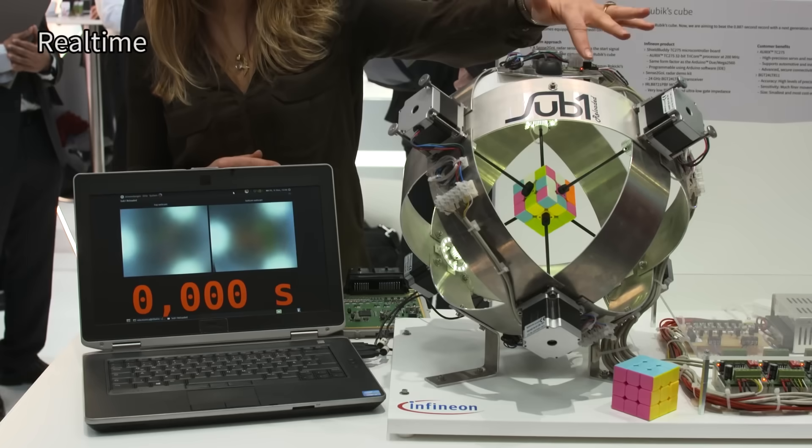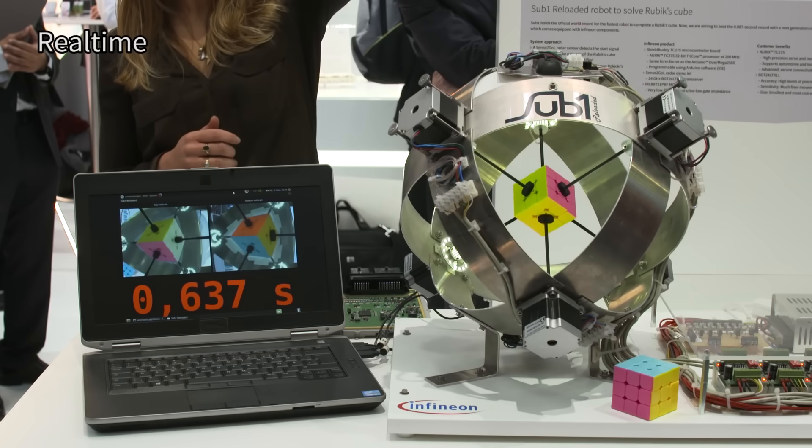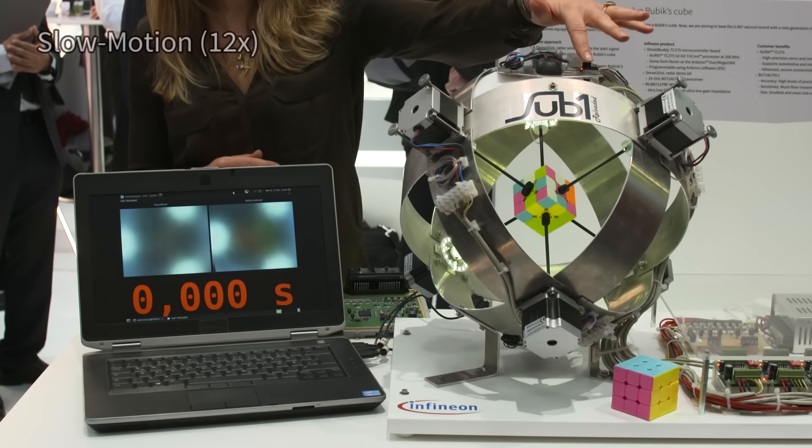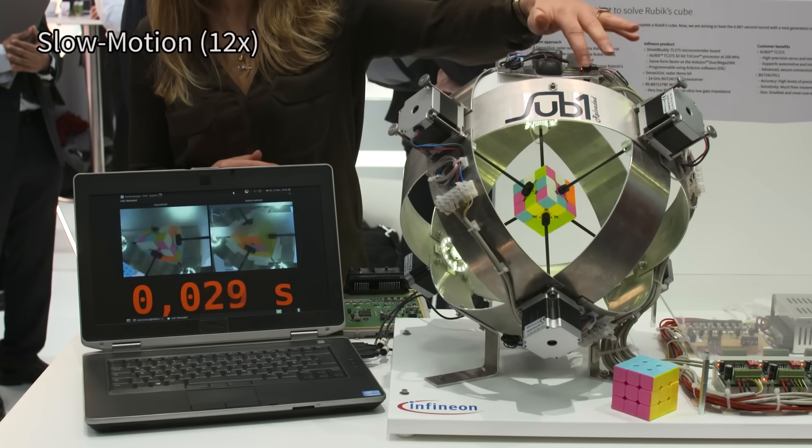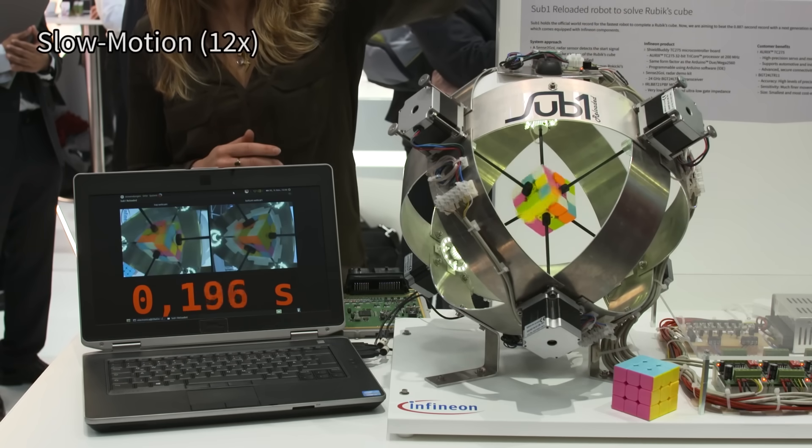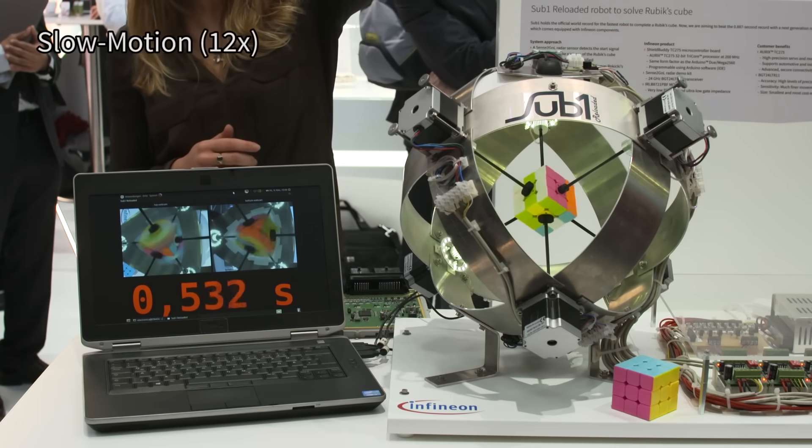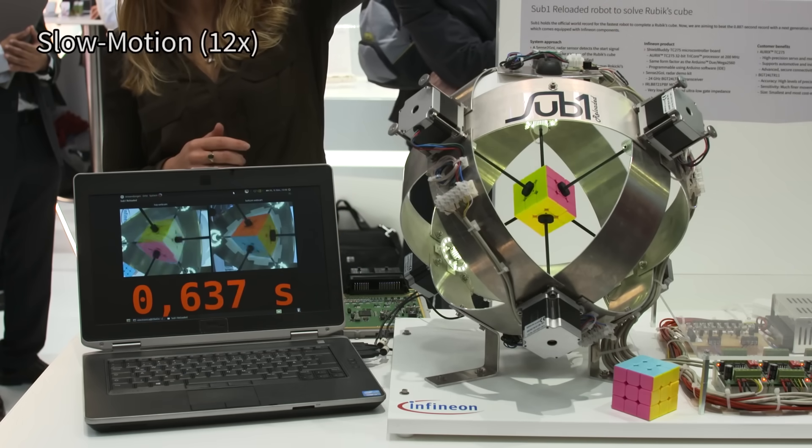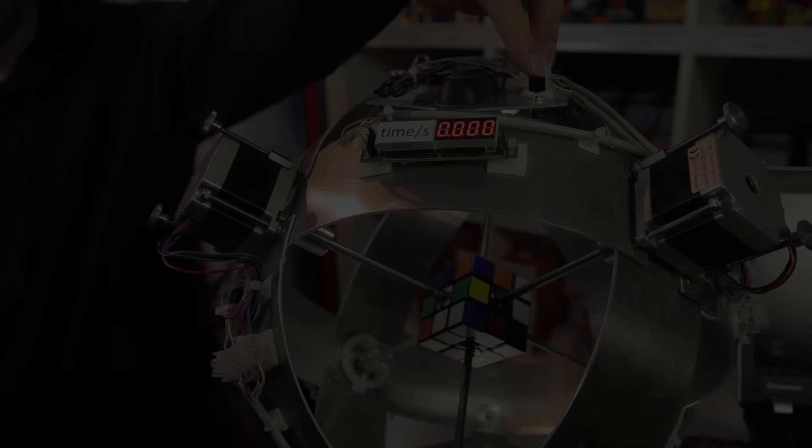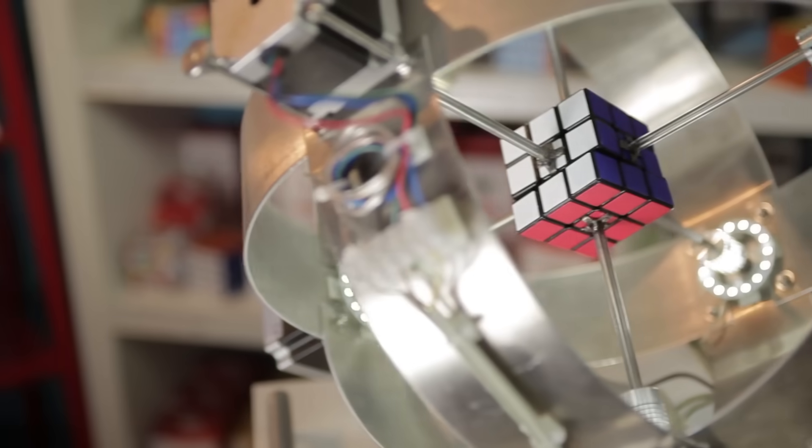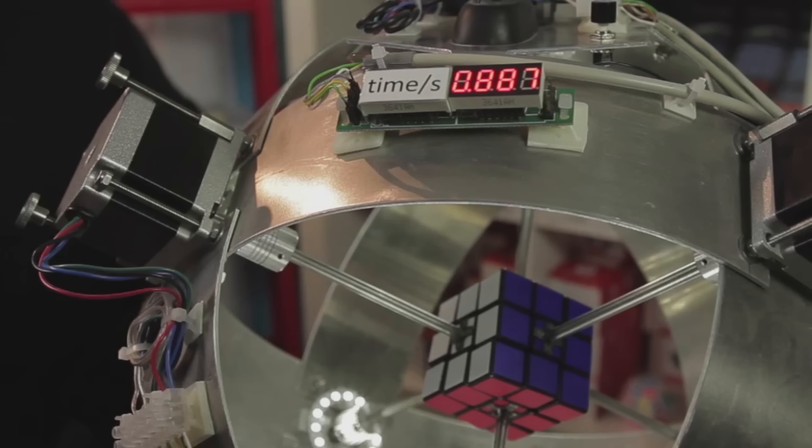Built by Infineon's engineer Albert Bier from Germany, the Sub-1 Reloaded smashed the Guinness World Record by becoming the fastest robot to solve a Rubik's Cube with just 0.637 seconds in November 2016. This breaks the previous record of 0.887 seconds achieved by an earlier version using a different processor.